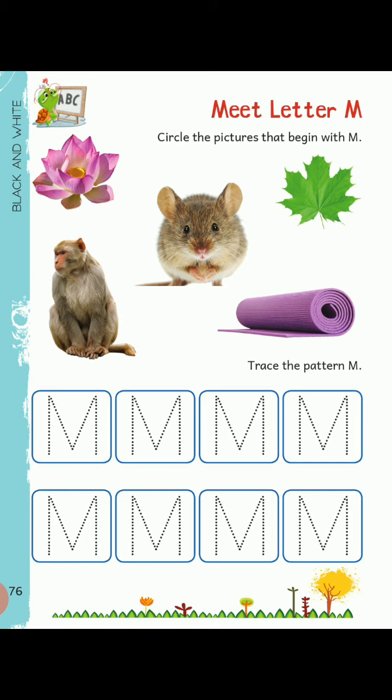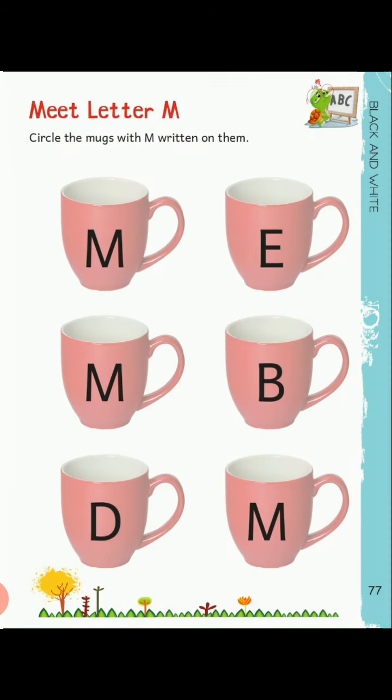Students, trace all the dotted area. Now, students, move to page number 77. Here we have some images of marks and some different letters written on them. We have to circle those images on which letter M is written on them.